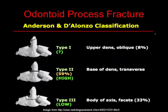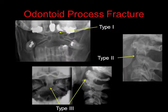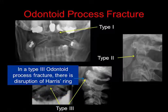A diagram outlines type 1 where the tip of the odontoid process is fractured, type 2 at the base of the odontoid process, and type 3 which is a low fracture including the body of the C2 vertebra. Pictures show a type 1 odontoid process fracture, a type 2 fracture through the base of the dens, and a type 3 fracture extending into the body of C2. Note that in a type 3 odontoid fracture, there is disruption of Harris' ring.